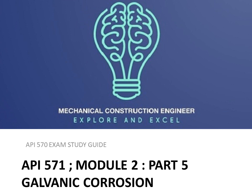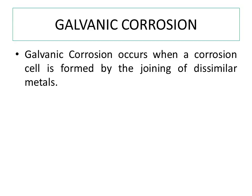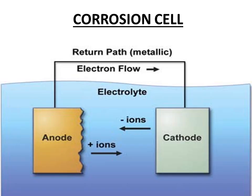Galvanic corrosion is the first damage mechanism under the heading of uniform or localized loss of thickness. There are seven damage mechanisms to study under this heading for the API 570 exam. Galvanic corrosion occurs when a corrosion cell is formed by the joining of dissimilar metals. The pictorial representation of the corrosion cell is taken from NERST study material. This is the base diagram for galvanic corrosion.